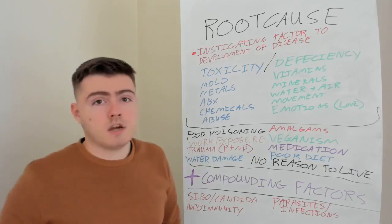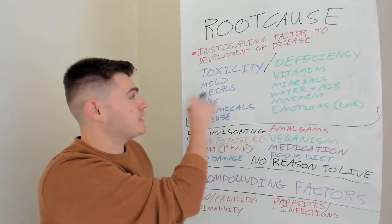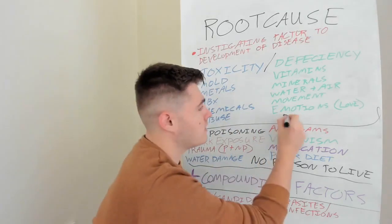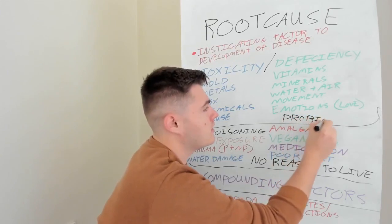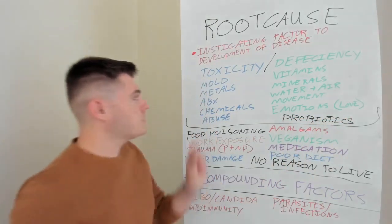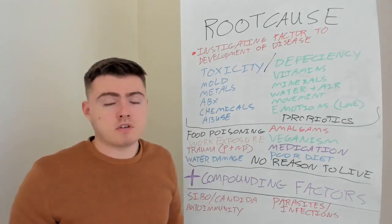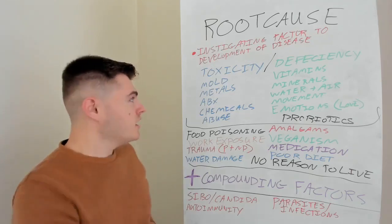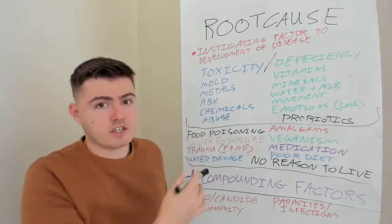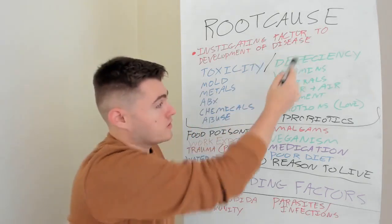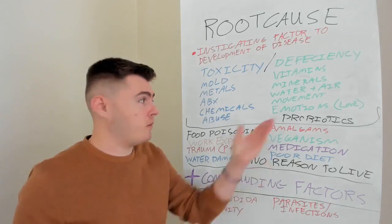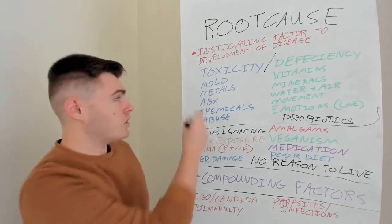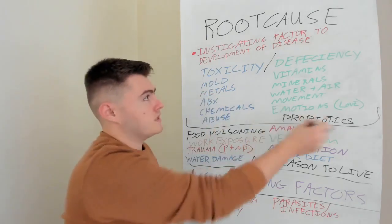We've got antibiotics, which are a type of toxic exposure. Most antibiotics are actually mycotoxins — think about how penicillin was discovered, the mold growing on the orange. Antibiotics are actually toxic; they're mycotoxins, and they can cause a deficiency because they kill the microflora. Then we're missing our probiotics and can't create vitamins or synthesize the chemicals we need to be healthy.